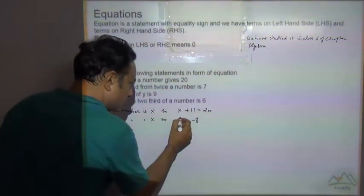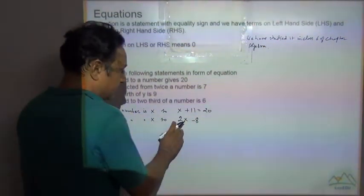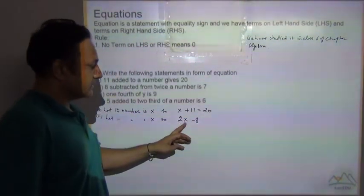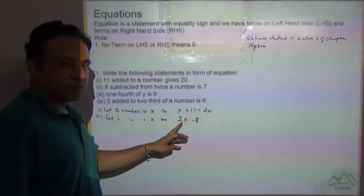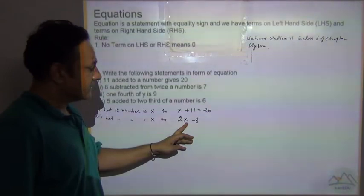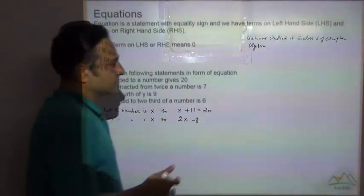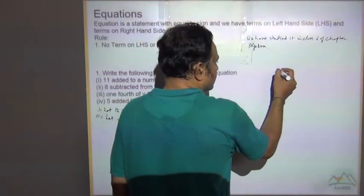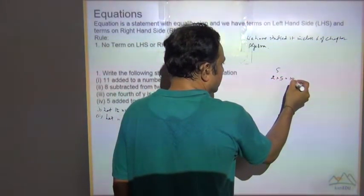Twice means 2 times the number, 2 times x. Now this is the numerical coefficient, this is your variable. When we have written both of them, it means 2 is multiplying with the x. If you have to double the number, see if the number is 5, you have to double it. Multiply it by 2.